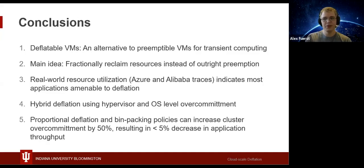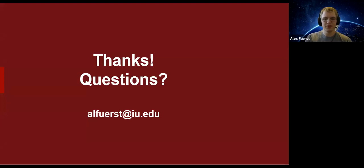In conclusion, deflatable VMs are an alternative to current transient offerings, but they fractionally reclaim resources instead of preempting VMs. Real-world data indicates that most applications work well within this model. Hybrid deflation uses the best of hypervisor and OS-level over-commitment mechanisms, and its deflation and placement policies can dramatically increase cluster over-commitment for a small impact in application throughput. Thank you very much, and we look forward to answering questions in the Q&A session.